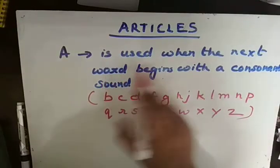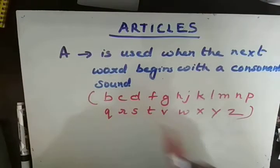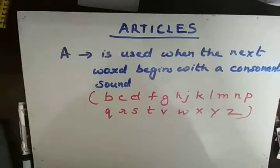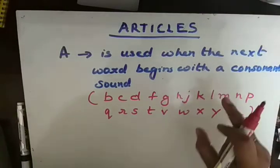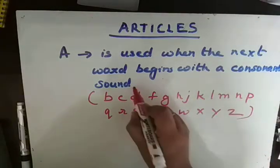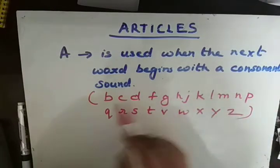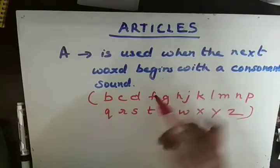A is used when the next word begins with a consonant sound. When the word after A starts with a consonant sound, we use A there. Remember — it is consonant sound, not just consonant. All the letters I have written here are consonants, and the sounds they produce — like B, C, D, F — are consonant sounds.